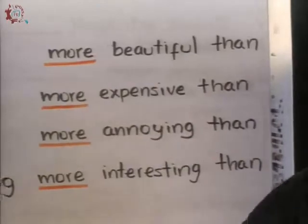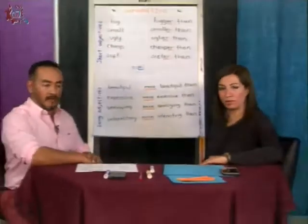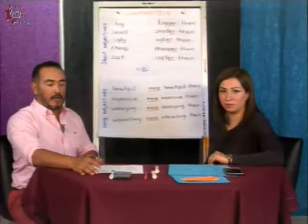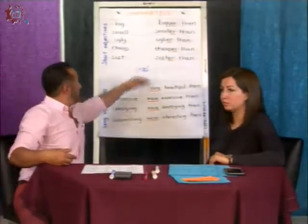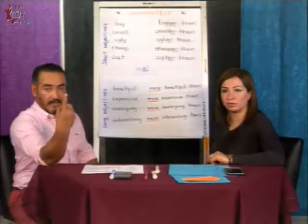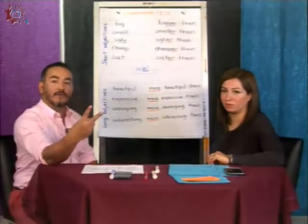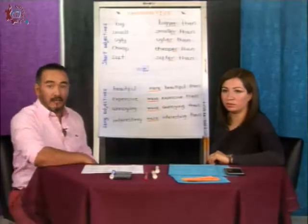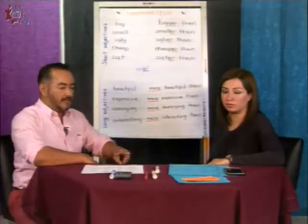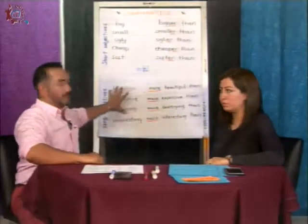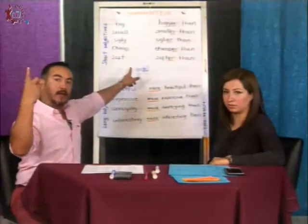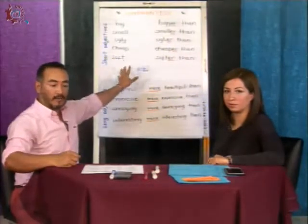Okay, no solamente lo que acaban de escuchar — también tenemos la regla, porque están preguntando: ¿cuándo pongo -ER y cuándo pongo 'more'? Muy simple: una sola sílaba es adjetivo corto. Pero si hay dos sílabas, también puede ser adjetivo corto siempre y cuando la segunda termine en -Y. Si son dos sílabas y no termina en -Y, son adjetivos largos y debemos colocar 'more'.